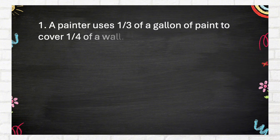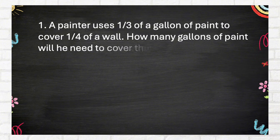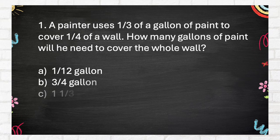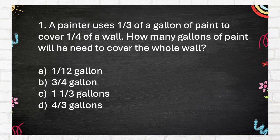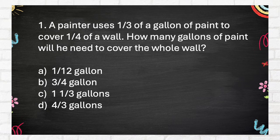Average Round. Number 1. A painter uses one-third of a gallon of paint to cover one-quarter of a wall. How many gallons of paint will he need to cover the whole wall? A. One-twelfth gallon. B. Three-quarters gallon. C. One-and-one-third gallons. D. Four-thirds gallons.